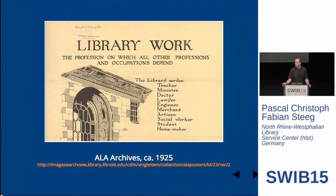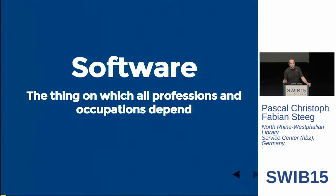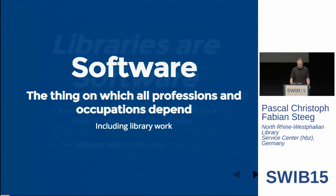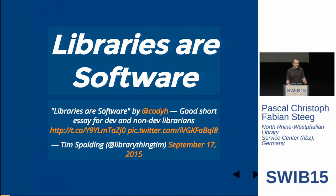For instance, my grandfather was a baker. I don't think he actually depended on library work. But even more so, it makes you wonder how true that is today. And I don't have an answer on that. But to the extent that this is true today, there is something else involved — and that's software. Because software is also something on which every profession and occupation depends. There are certainly professions which don't depend on software today, but there is one profession which certainly does, and that's library work. Because libraries are software. The services that libraries provide are provided directly or indirectly through software.